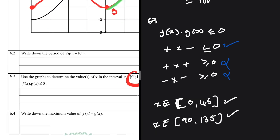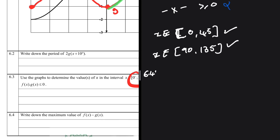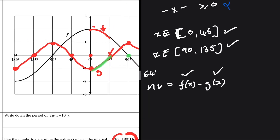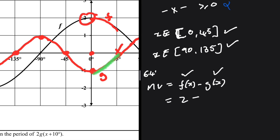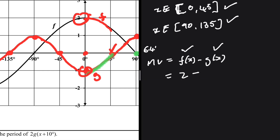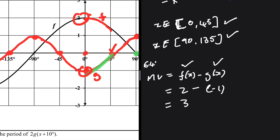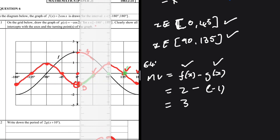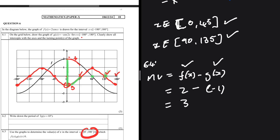Question 6.4: find the maximum value of f(x) - g(x). This is maximum when f(x) is at its highest and g(x) is at its lowest. f(x) is at its highest at 2, and g(x) is at its lowest at -1. So the maximum is 2 - (-1) = 3. You can see on the graph that the distance between the two functions is greatest at that point.